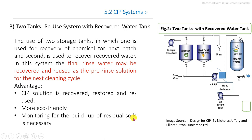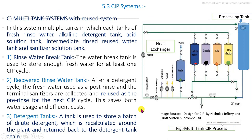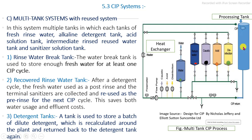The third option is the multi-tank system with a reusable system. Multi-tank means more than two tanks, including a fresh water tank, return water tank, caustic solution tank, acid solution tank, and disinfectant solution tank. This is the complete multi-tank CIP system, connected with the processing vessel or processing line, with a recycling system in which all detergents, waters, and disinfectants are separately stored and reused for the next batch.